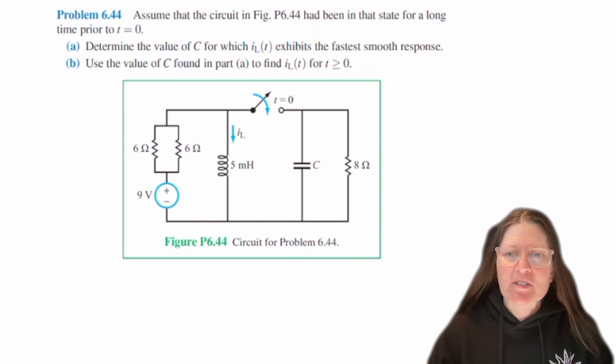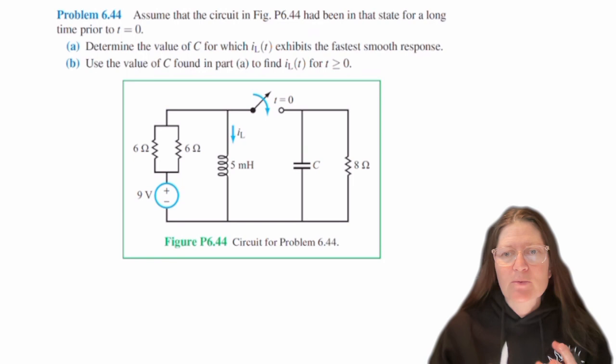This time we're going to do a little bit more of a design, so it's going to just be thinking about it a little differently. So in this we want to actually determine the value of C for which IL(t) will exhibit the fastest smooth response. So you have to determine from that what does that mean?